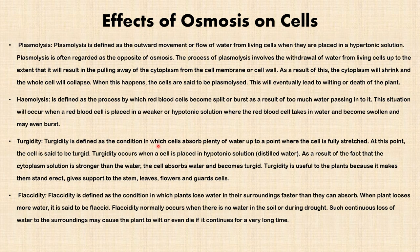Turgidity is another effect of osmosis on cells. Turgidity is defined as the condition in which cells absorb plenty of water to a point where the cell is fully stretched. This happens in plant cells — at this point the cell is said to be turgid. When a plant cell is placed in a hypotonic solution, usually distilled water, which has lower concentration than the cell, the cell absorbs water and becomes turgid. Turgidity is useful to plants because it makes them stand erect and gives support to the stem, leaves, flowers, and guard cells.